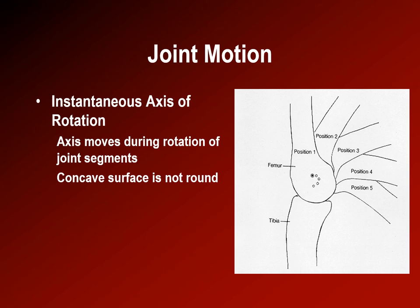The location of the axis of rotation depends upon the joint angle — this is also called the instantaneous axis of rotation. This is shown in the diagram where the position of the axis shifts as the knee moves through its range.